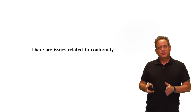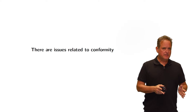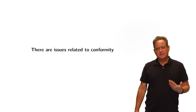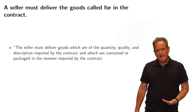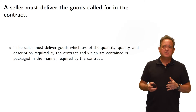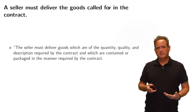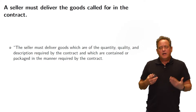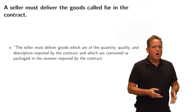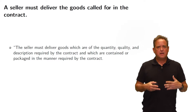There are three elements to performance: delivery, conformity, and payment. Having talked about delivery, we now turn to conformity. The seller has an obligation to deliver conforming goods, meaning the seller must deliver the goods called for in the contract. The goods must match in quantity, quality, and description those goods anticipated in the contract.